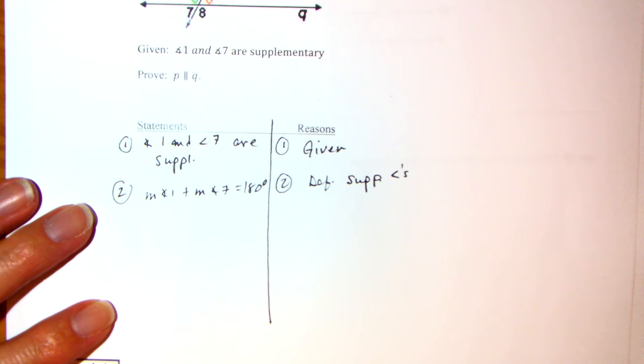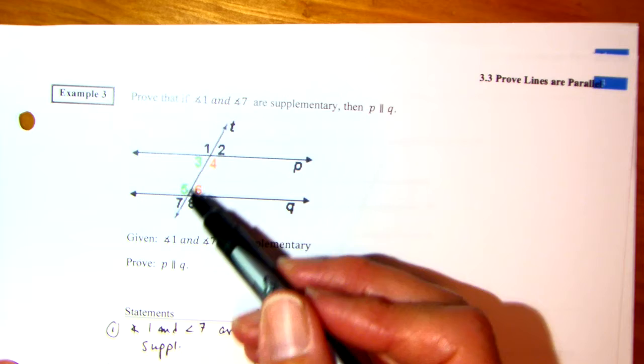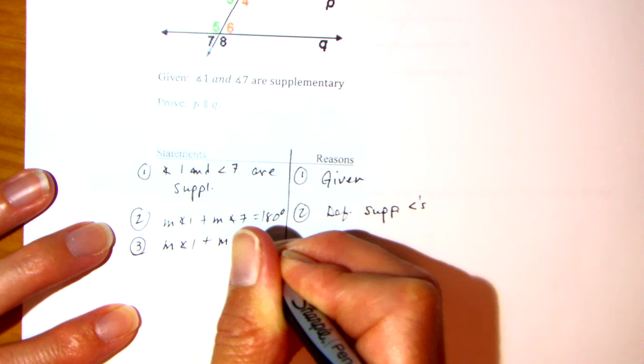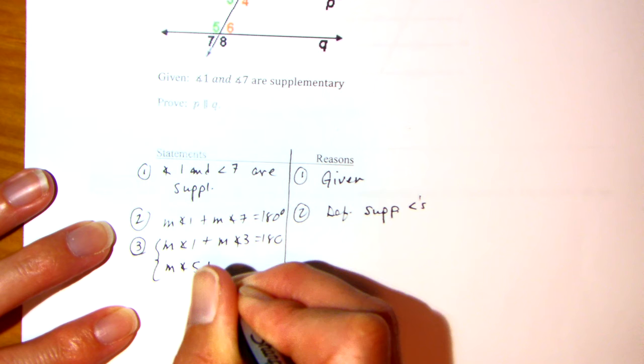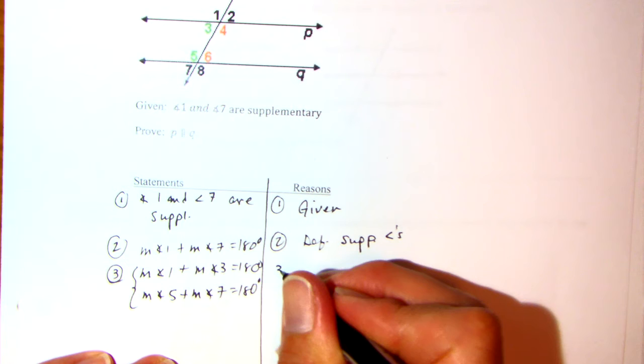Look at angles 1 and 3, and also 5 and 7 in the picture. Those are linear pairs and they add to 180. So: measure of angle 1 plus measure of angle 3 equals 180, and measure of angle 5 plus measure of angle 7 equals 180. These two equal 180 and these two equal 180. Why? Linear pair postulate.